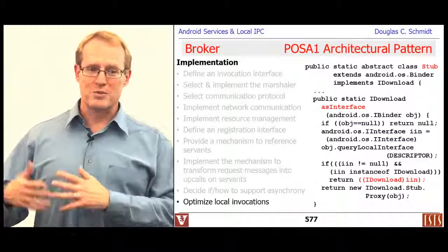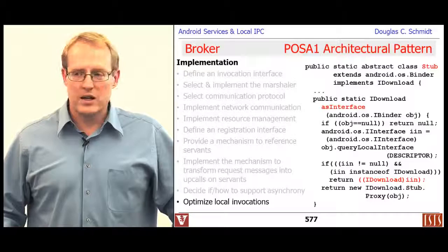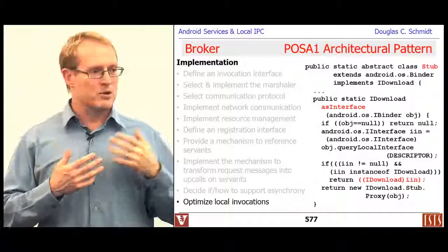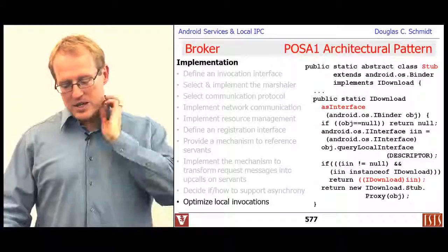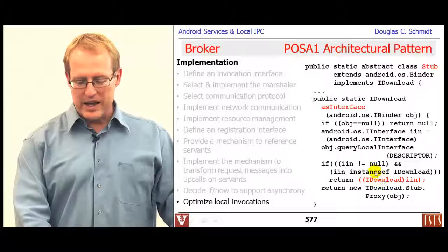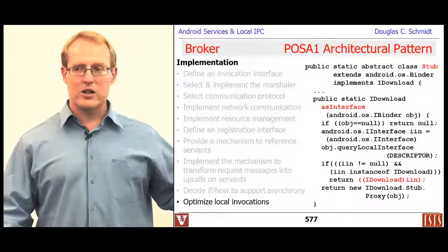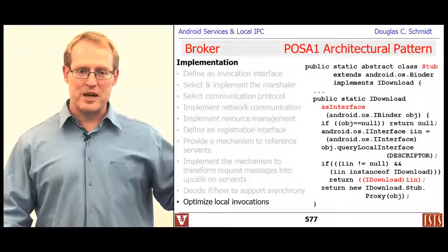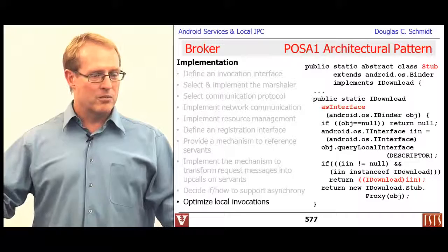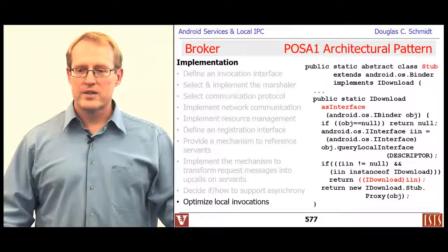The last key thing to think about when implementing a broker is whether to do co-location optimizations for cases where you invoke a method on something in the same address space as the caller. The generated asInterface method actually has checks to see whether the call is resolvable in the same address space. If it is, it returns the interface directly and you can invoke a method call straight to it. If it's not co-located, it creates a proxy, and when the proxy is called, it does all the marshaling and transmission through the binder mechanism to the receiver side.